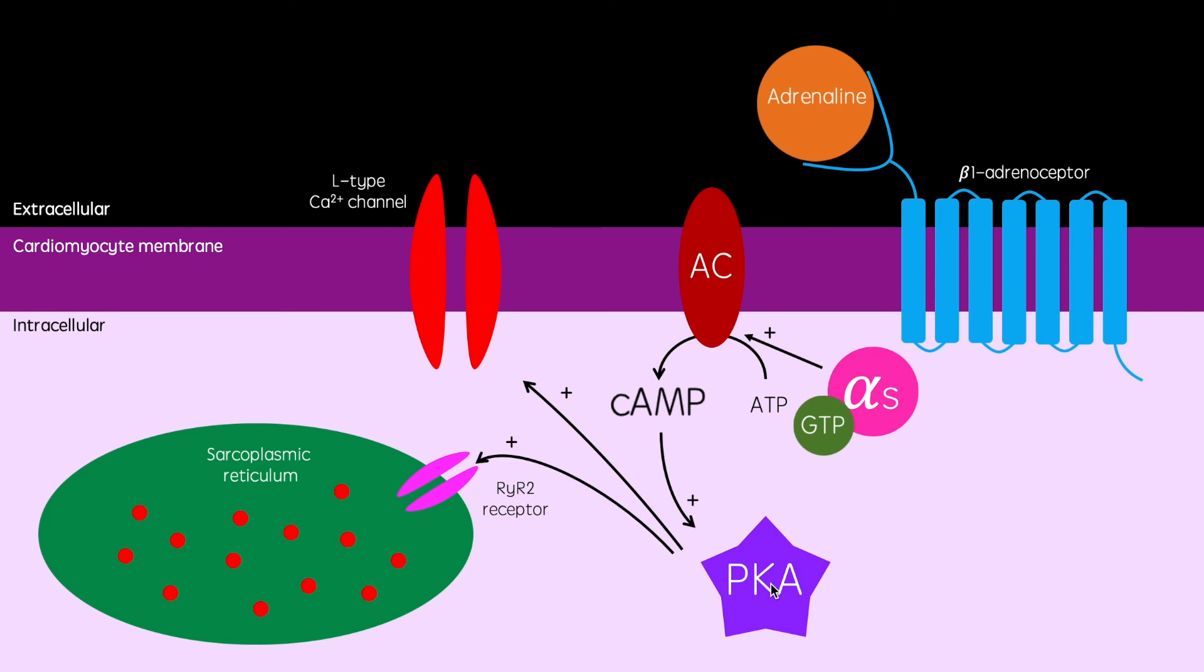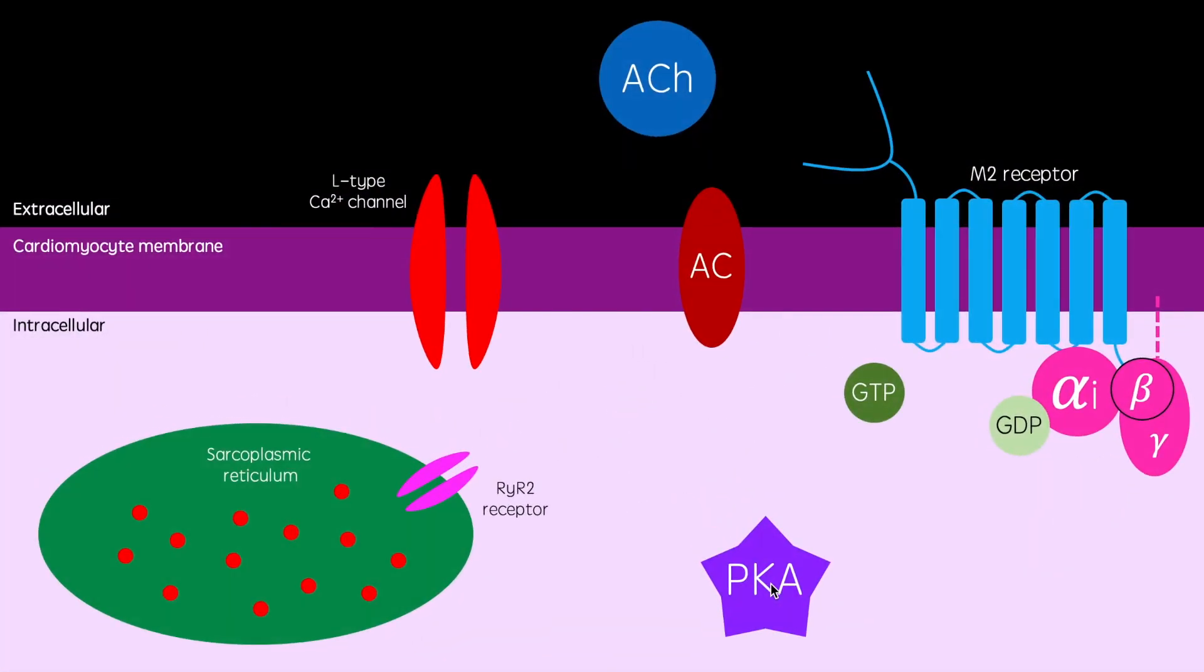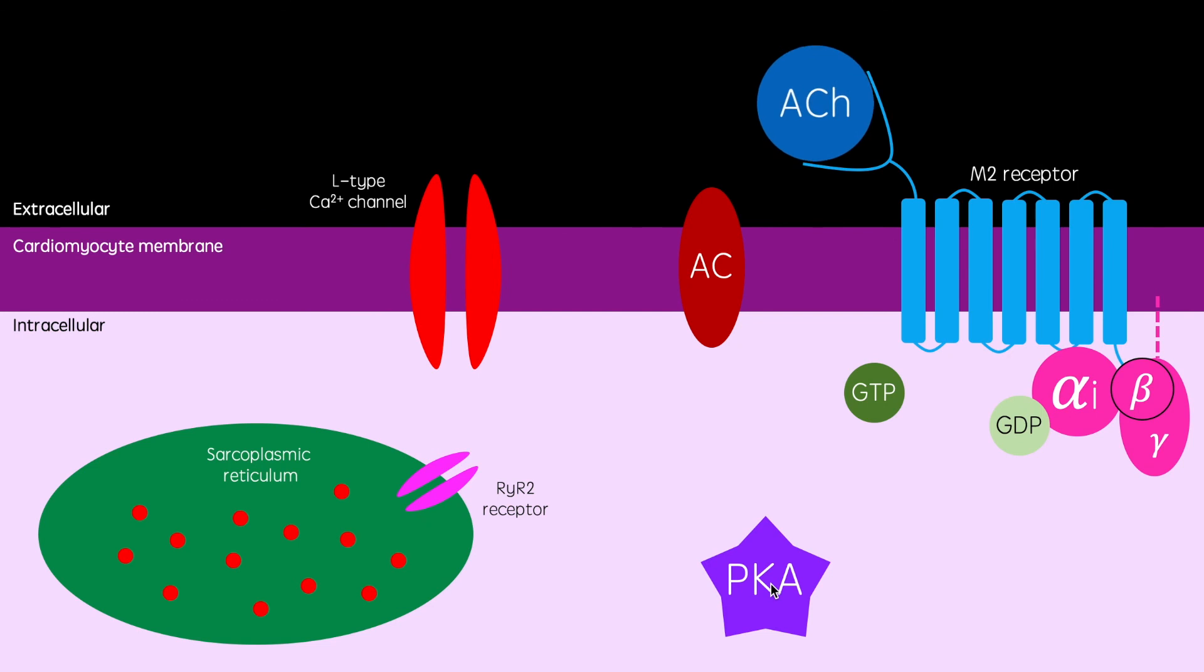This is in complete contrast with the regulation by the parasympathetic nervous system. In this rest and digest state, acetylcholine is released and activates muscarinic M2 receptors on cardiomyocytes. These receptors are Gi coupled, meaning they do the complete opposite of beta-1 adrenoceptors. They inhibit adenylyl cyclase. This means protein kinase A will not evoke abbreviated contraction. Adrenaline and acetylcholine constantly work against each other to maintain an appropriate heart rate.